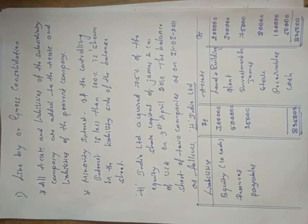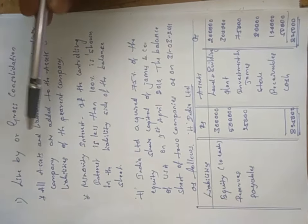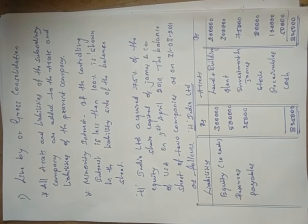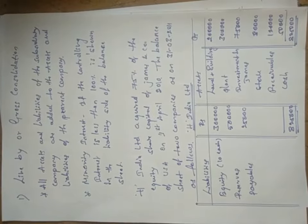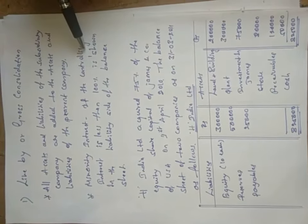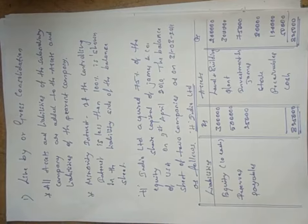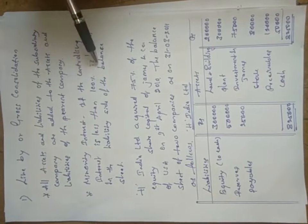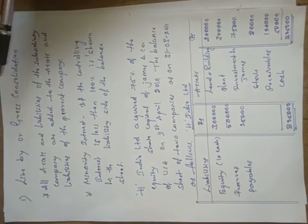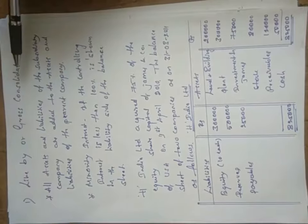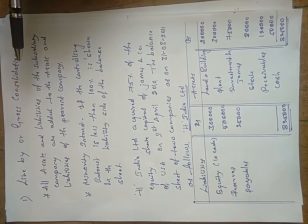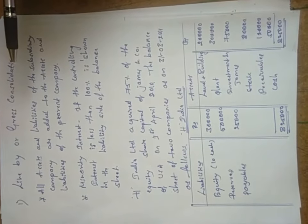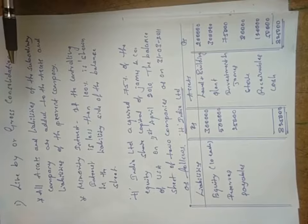In case of line by line consolidation, there are two important aspects. First, all the assets and liabilities of the subsidiary company are added to the assets and liabilities of the parent company. Second, minority interest — if the controlling interest is less than 100 percent — is shown on the liability side of the balance sheet.